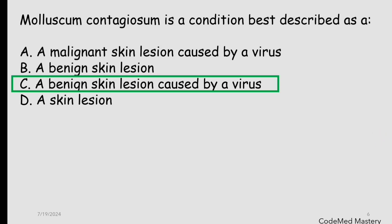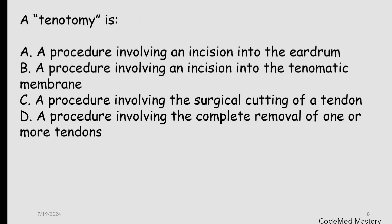Next question: a tenotomy is — option A: a procedure involving incision into the eardrum; option B: a procedure involving incision into the tympanic membrane; option C: a procedure involving surgical cutting of a tendon; option D: a procedure involving complete removal of one or more tendons. The right answer is option C — a procedure involving surgical cutting of a tendon.